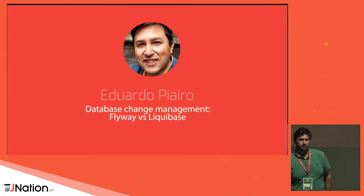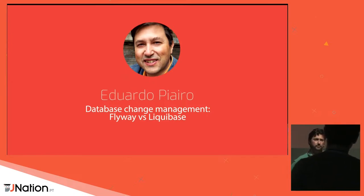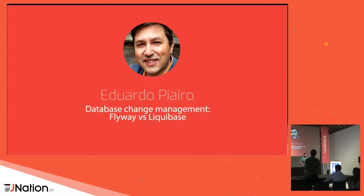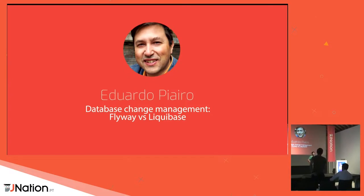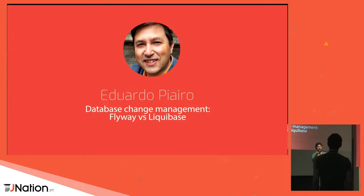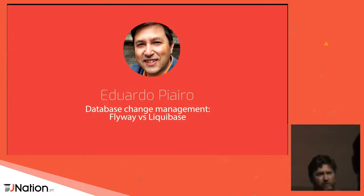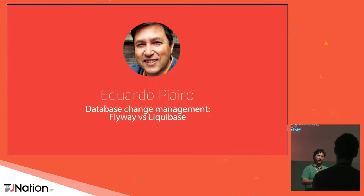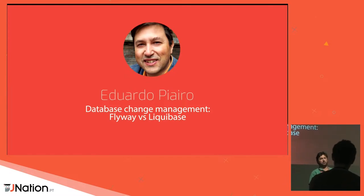Question: You mentioned Liquibase adds a locking mechanism to prevent multiple instances accessing concurrently. Is there a similar mechanism in Flyway? The speaker answers: In Liquibase it's session level. In Flyway it's object level — when changing an object, it locks using a transaction and then applies. That doesn't fully prevent multiple instances in the same way — the locking mechanism is more robust in Liquibase.